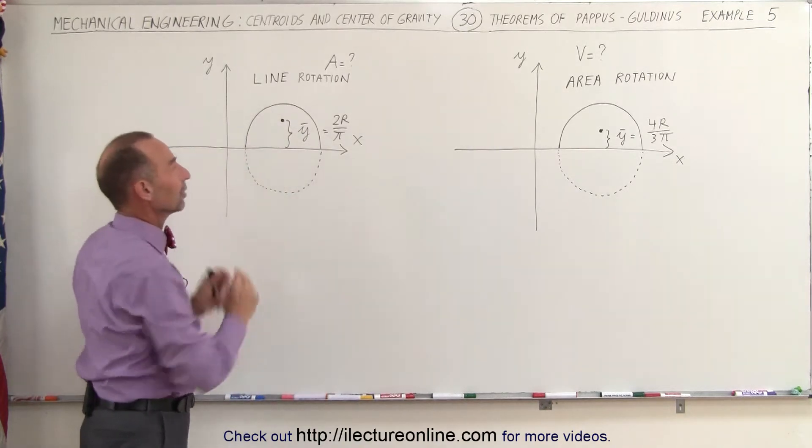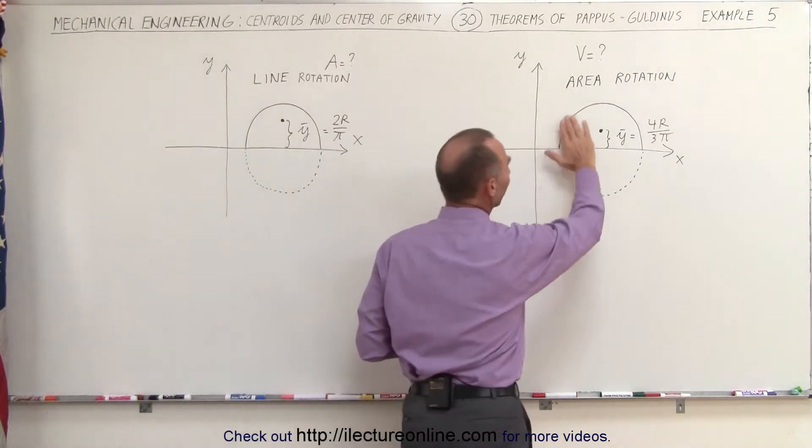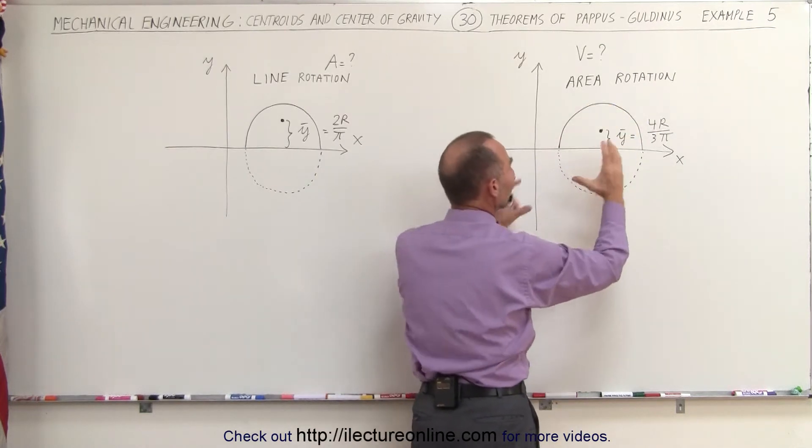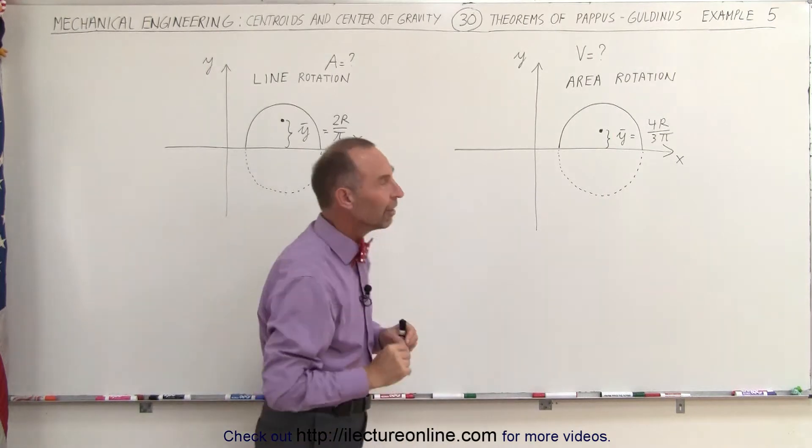Here, we're going to take this area, which is a semi-circle, and rotate it about the x-axis, and we'll again get a sphere, but in this case, we're going to try to find the volume.